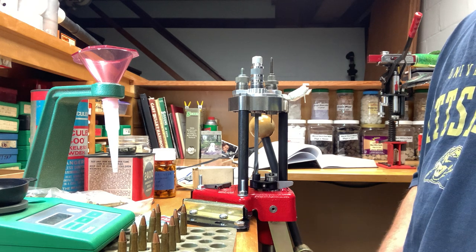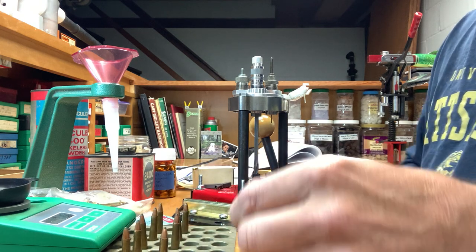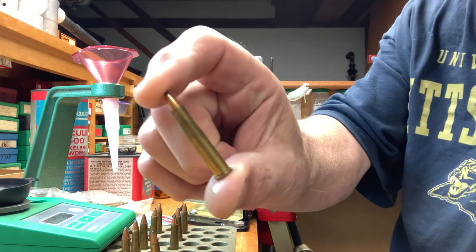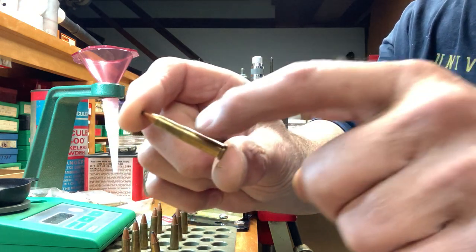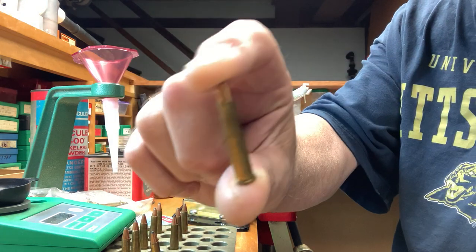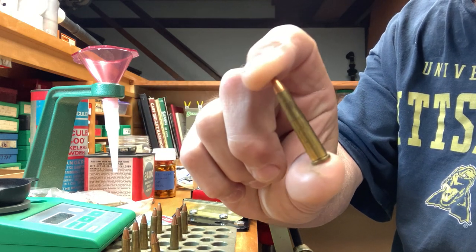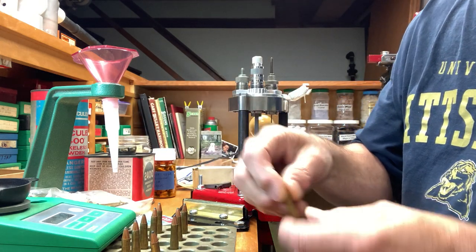.22 Hornet is a little weird to load if you don't know what the cartridge is. It's a little bottleneck cartridge with a real slight slope right there.